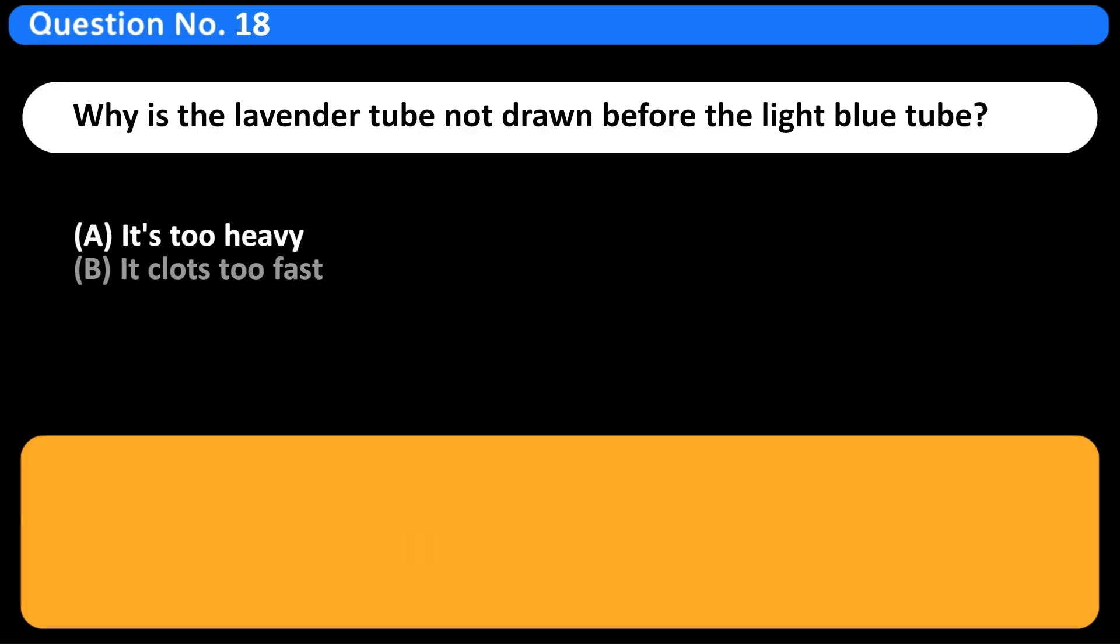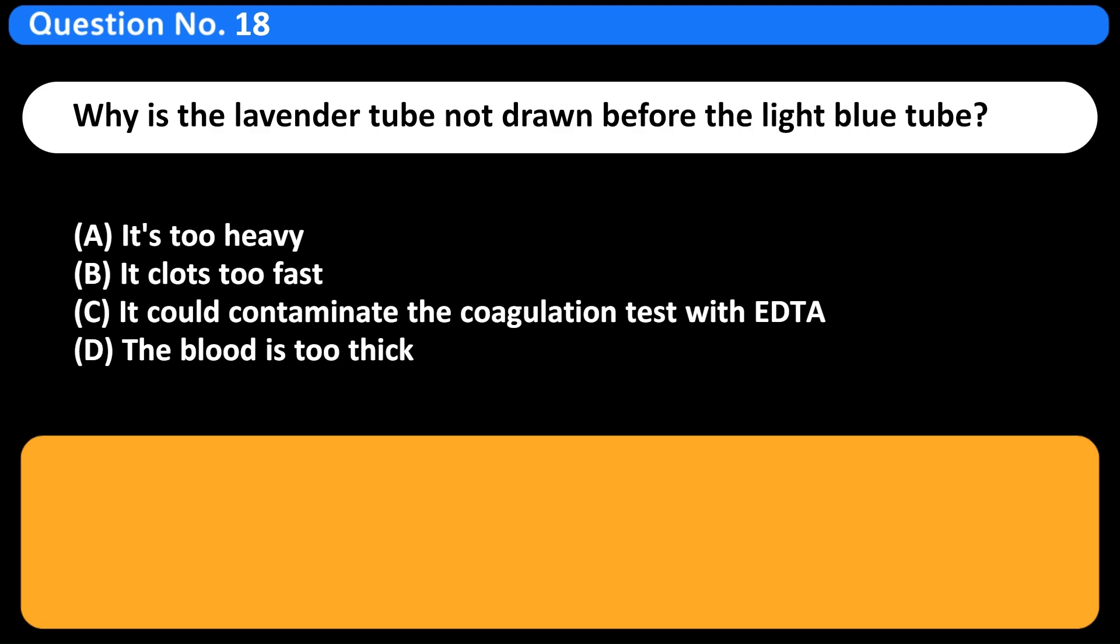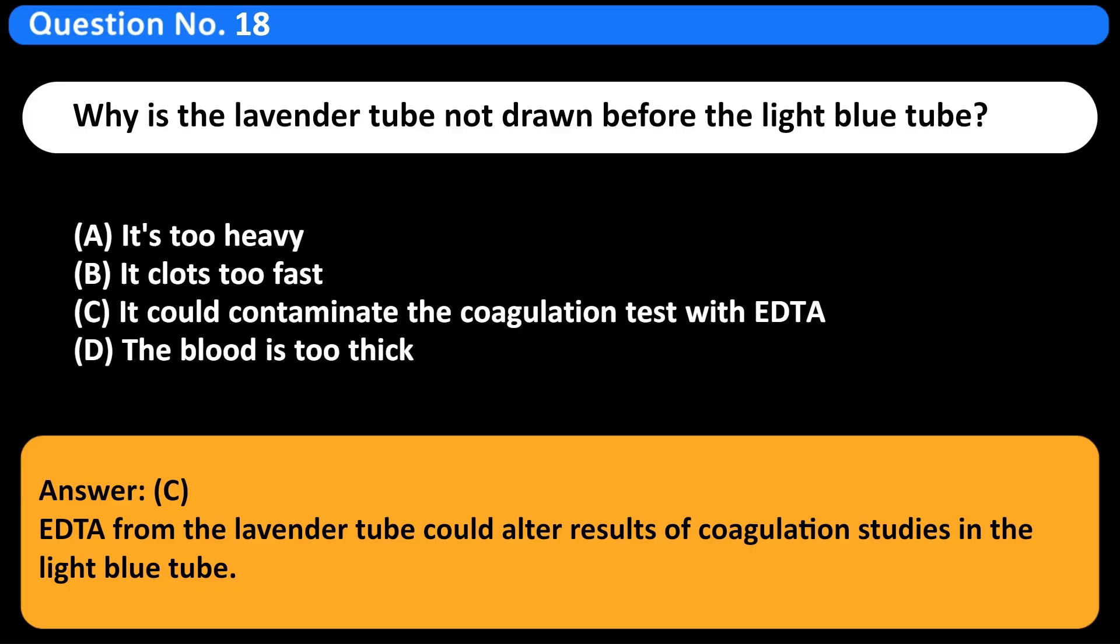Why is the lavender tube not drawn before the light blue tube? A. It's too heavy. B. It clots too fast. C. It could contaminate the coagulation test with EDTA. D. The blood is too thick. Answer C. EDTA from the lavender tube could alter results of coagulation studies in the light blue tube.